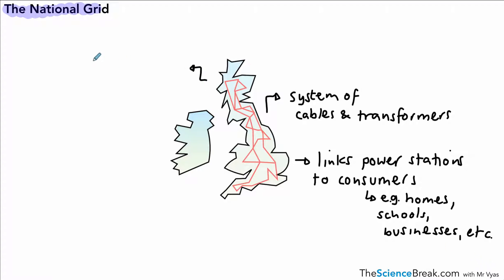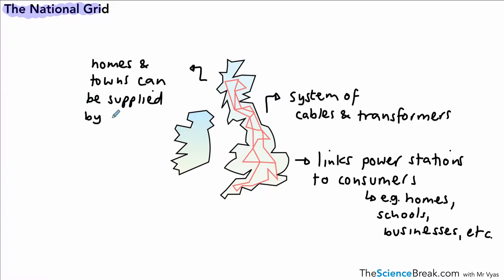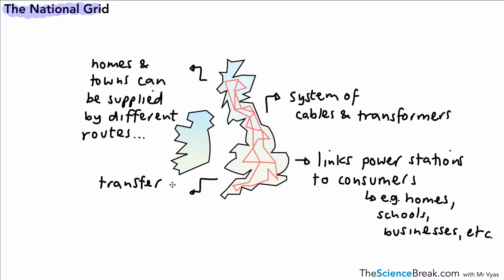It's a network of cables and transformers, which means homes and towns can be supplied by different routes. So if one particular area is not transferring electricity for some reason, the electricity can be supplied by a different route. We also need to know and be able to explain why the transfer of energy is very efficient, and we're going to have a look at that next.